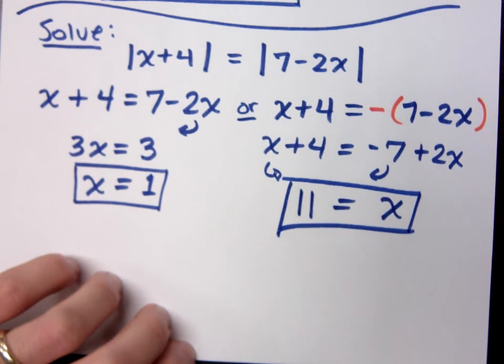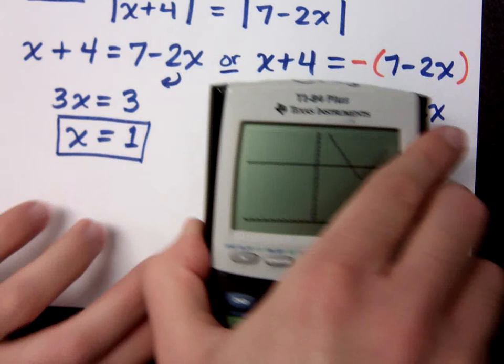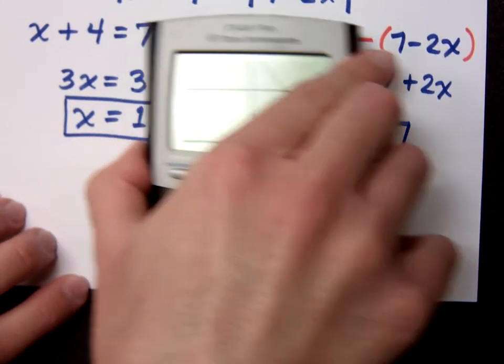Now, if I were to graph these guys, how many intersection points should I have? 12. I should have two. Let's just check that real quick. Let's do it over here.